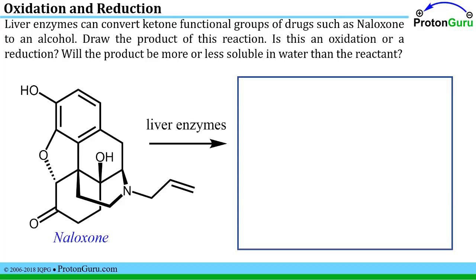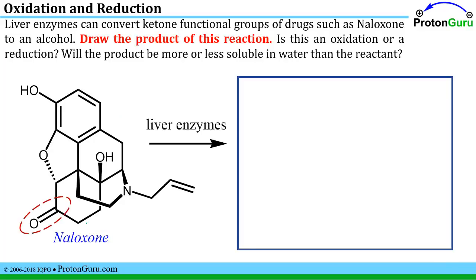Our first question is kind of like something you might see on a standardized test or an exam. It has a word problem and a relatively complicated structure, but it's really asking us for some pretty simple information if we can sort through the wording. This question tells us that liver enzymes can convert a ketone functional group of drugs to an alcohol functional group, and asks us to draw the product of that reaction, identify whether it is an oxidation or a reduction, and whether the product will be more or less soluble in water than the reactant.